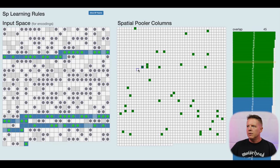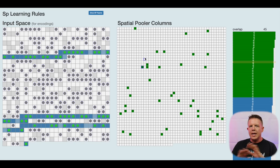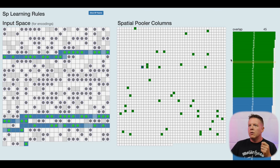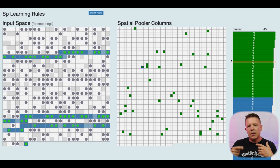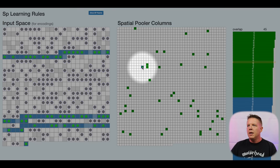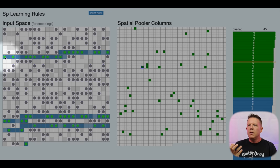Let's grab a column and talk about how a spatial pooler learns. None of the columns that are inactive will learn anything — no state changes happen to columns that have not been activated. The only learning that goes on happens in these 40 active columns. These are all going to increment and decrement their permanence values based upon what connections they have in the input space in this time step. For this column, all connections falling within the input space will have their permanence values incremented — they'll become stronger. That input falling over top of those connections increases the permanence of those connections; it's learning those connections.